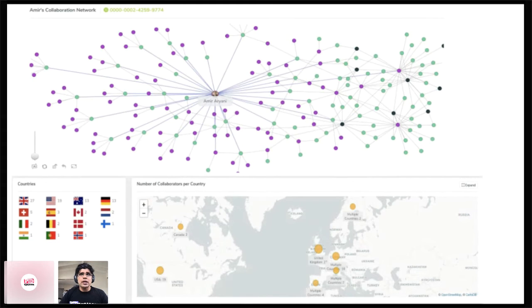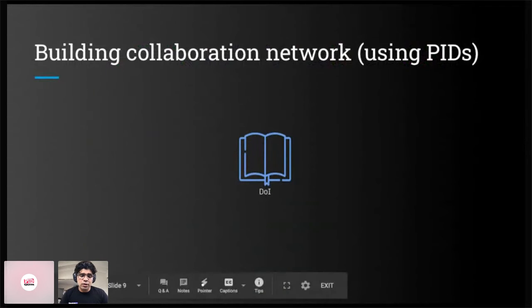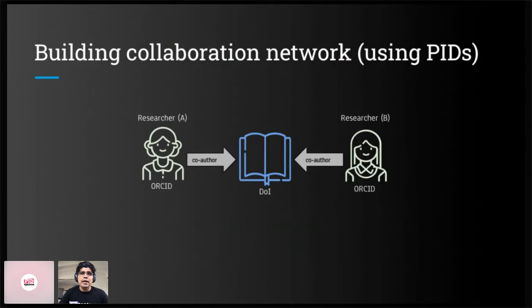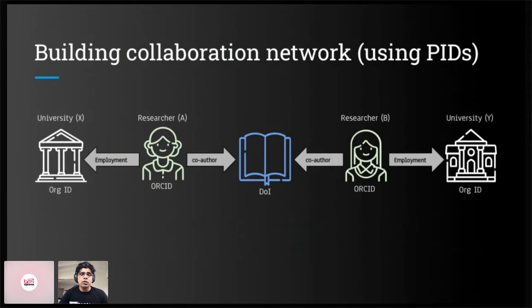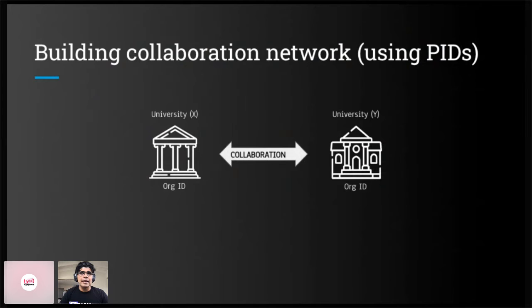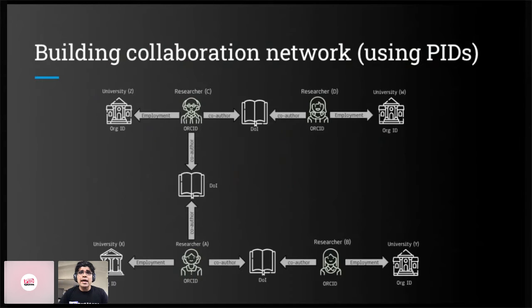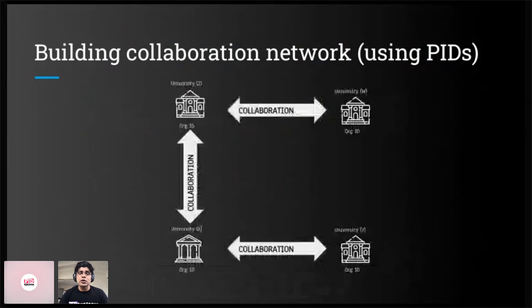How did we build the collaboration network using PIDs? It starts with a journal paper or authored publication that has a DOI. Say two researchers with ORCID IDs — researcher A and researcher B — co-author that publication. Researcher A belongs to University X, researcher B belongs to University Y. Because both co-authored a single paper, we can say University X is collaborating with University Y. This is the basis for mapping collaborations between institutions and countries. We can extend it further: if A collaborates with C, and D collaborates with C, you can see collaboration happening across the board.